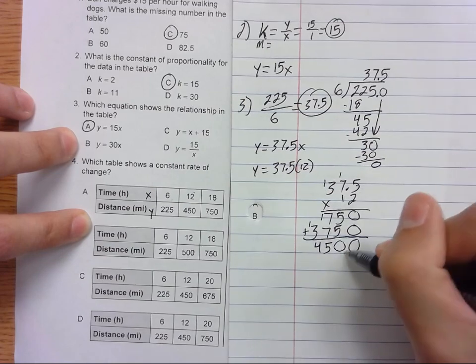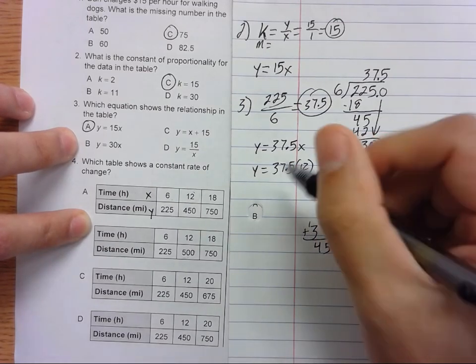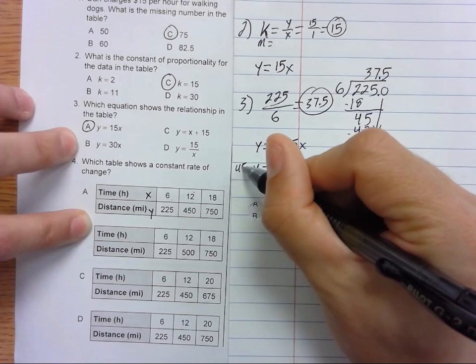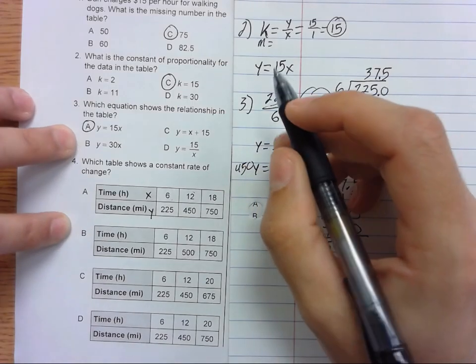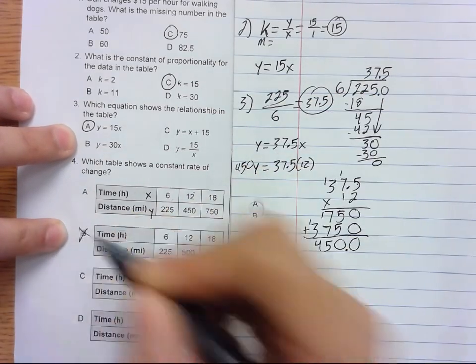We have to move the decimal over one time. When X is 12 and Y is 450, so we know that B cannot be our answer.